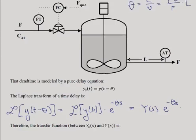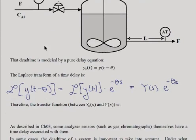So therefore, the transfer function between your sensor value and your output value is your transfer function for dead time, G_DT(s), which is equal to e to the minus theta s.